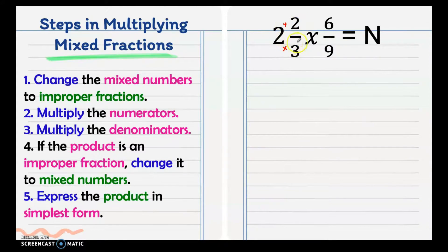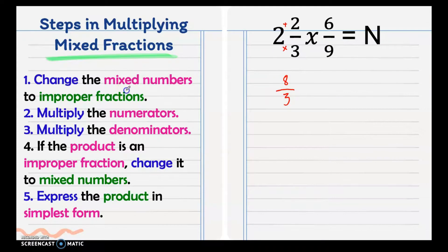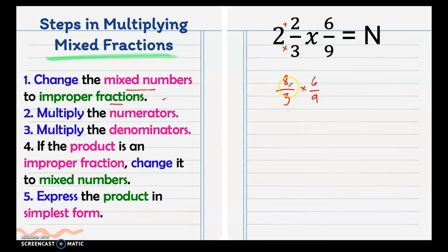Then copy the denominator. So we have 3 times 2 is 6, plus 2 is 8, then copy the denominator which is 3. That is how you change a mixed number into an improper fraction. And 6/9 is already a proper fraction, so we can multiply that right away.